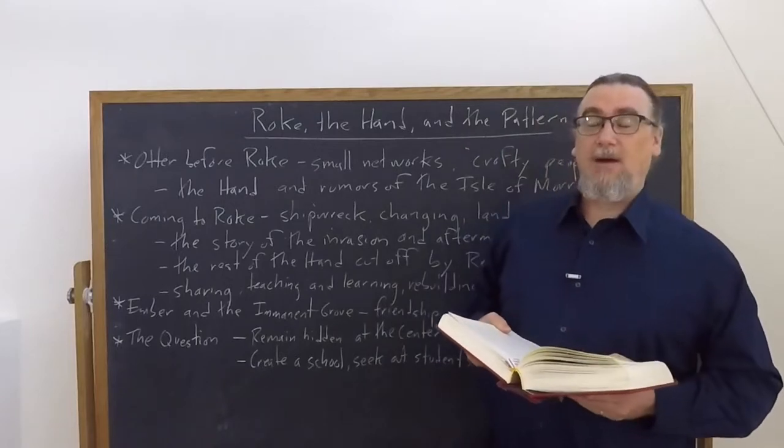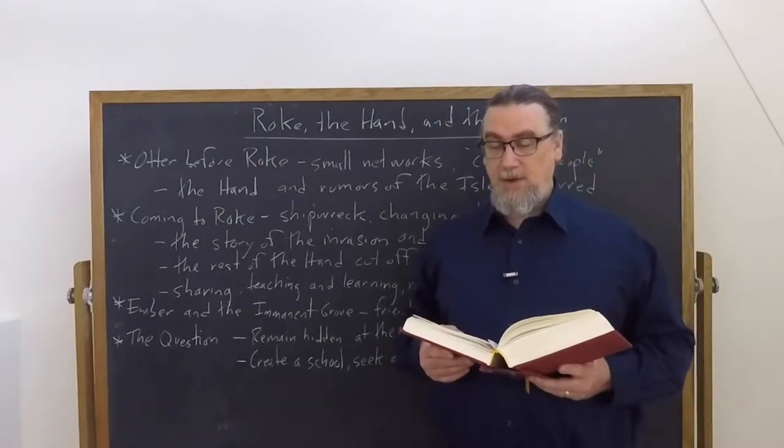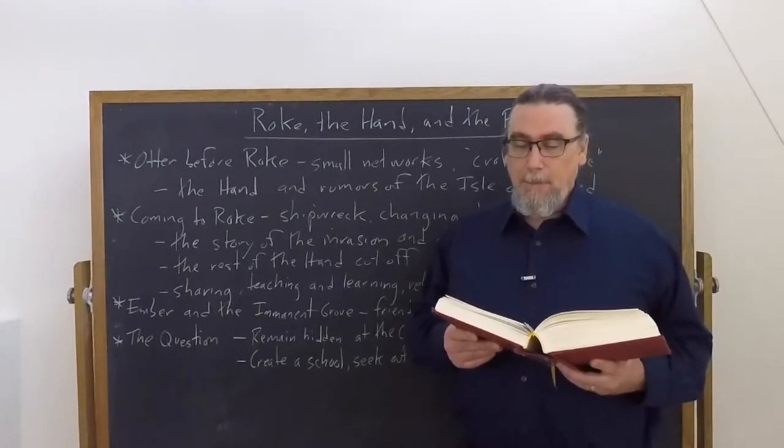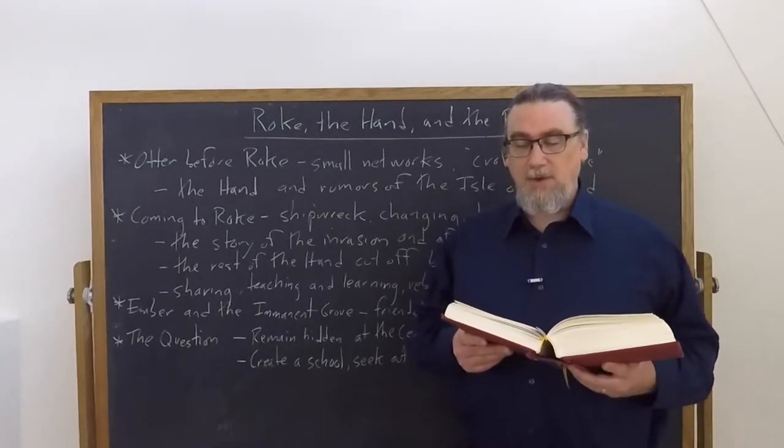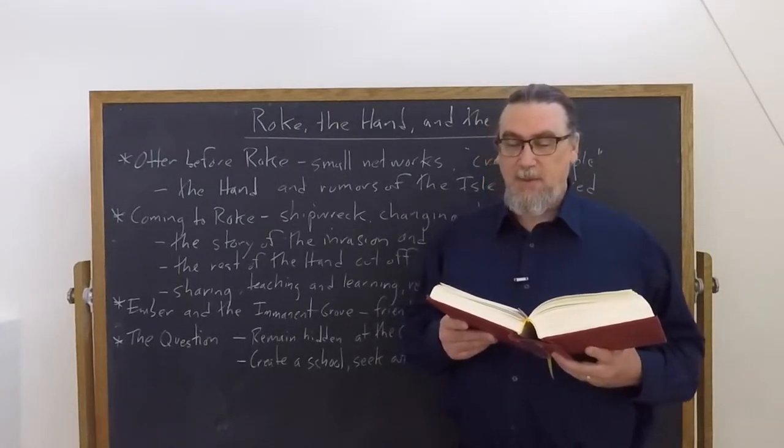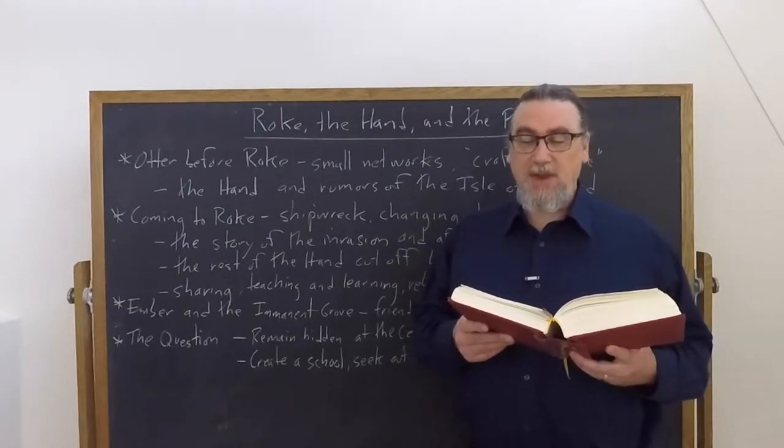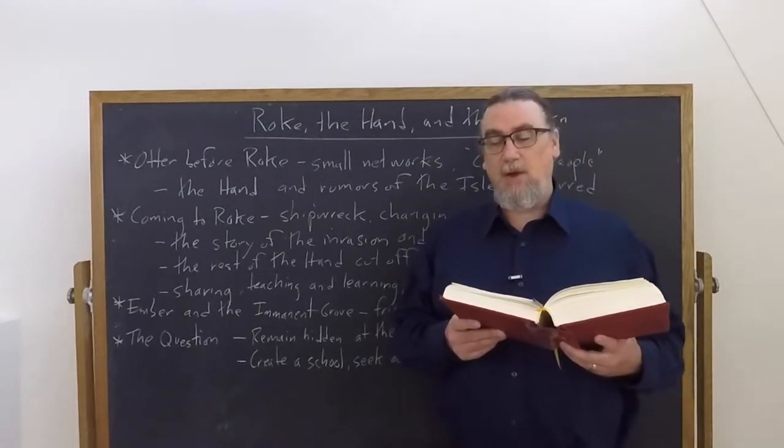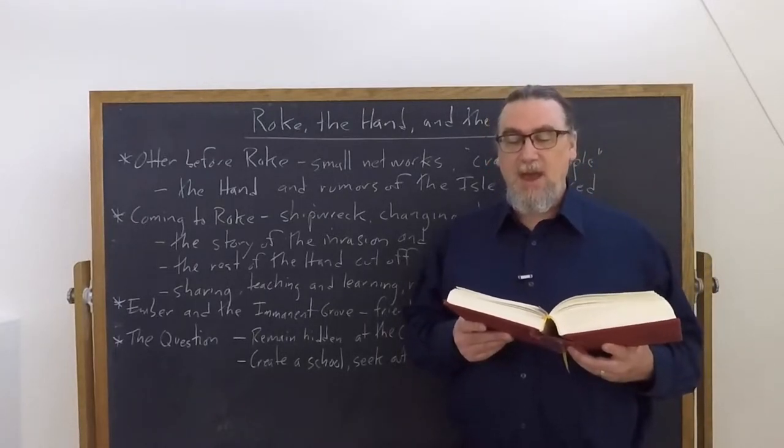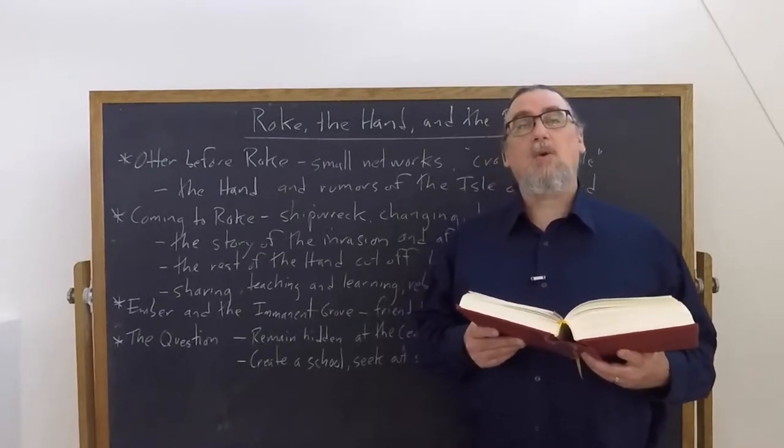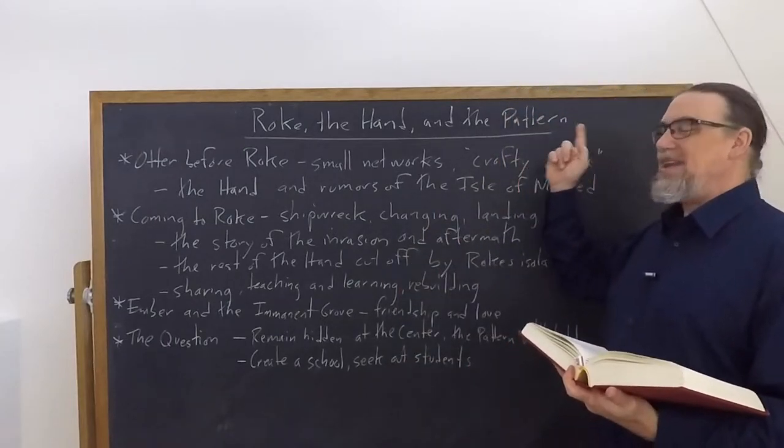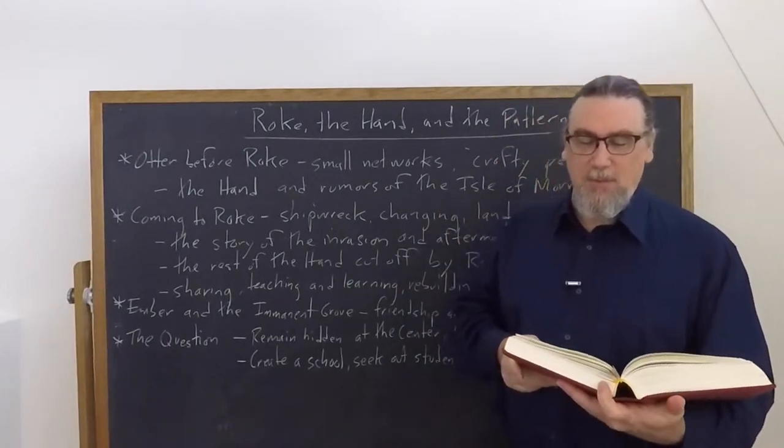Otter is a boy on Havnor who was born with some magical ability. Otter is taught more than just the song of creation by this wise woman, crafty person. She knew his gift. She and some men and women like her, people of no fame, some of questionable reputation, had in all some degree that gift. And they shared in secret what lore and craft they had. This is something that's going to get us to the grand idea of the pattern or the equilibrium.